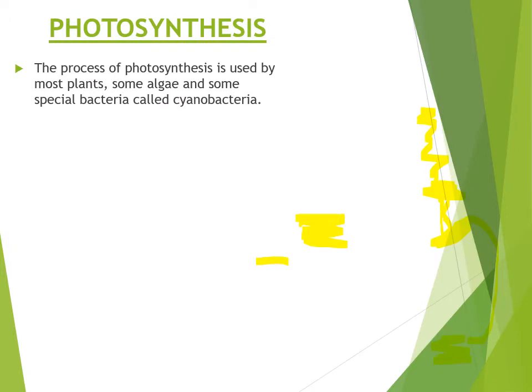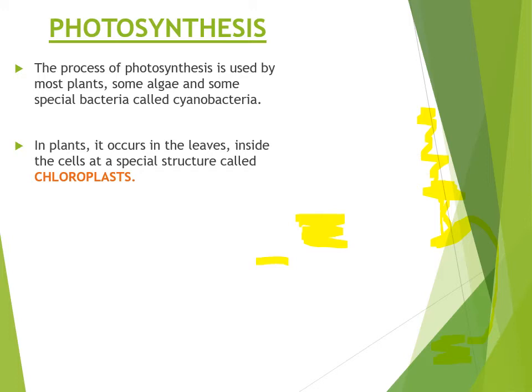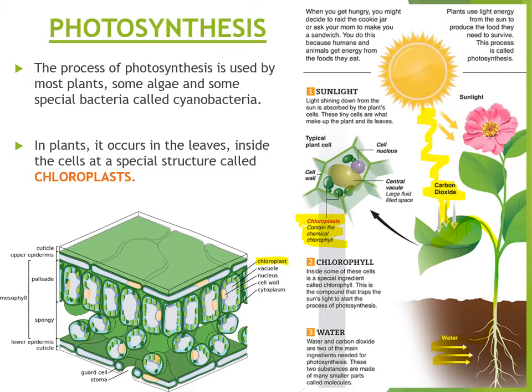Let's look into photosynthesis in a more detailed manner. The process of photosynthesis is mostly used by plants, some algae, and also some bacteria called cyanobacteria. In plants, which is what we'll focus on, it occurs in the leaves inside the cells at a special structure called chloroplasts. If you look at the cross-section diagram of our leaves, all those little green dots inside the cells are the chloroplasts, and that's where photosynthesis occurs.